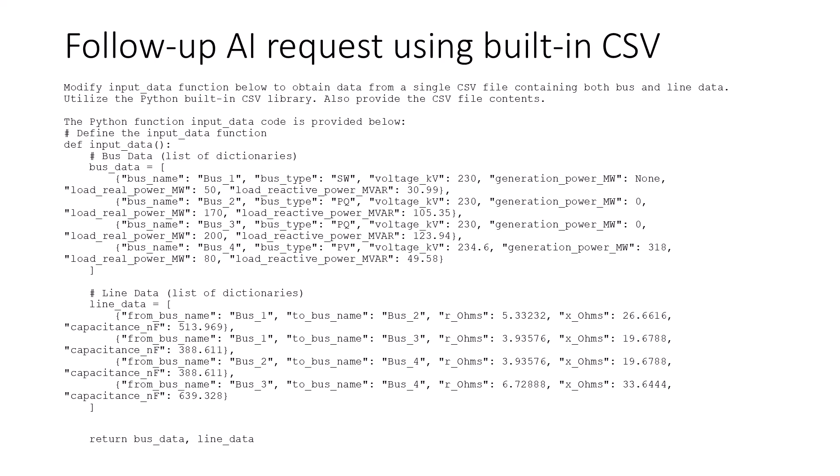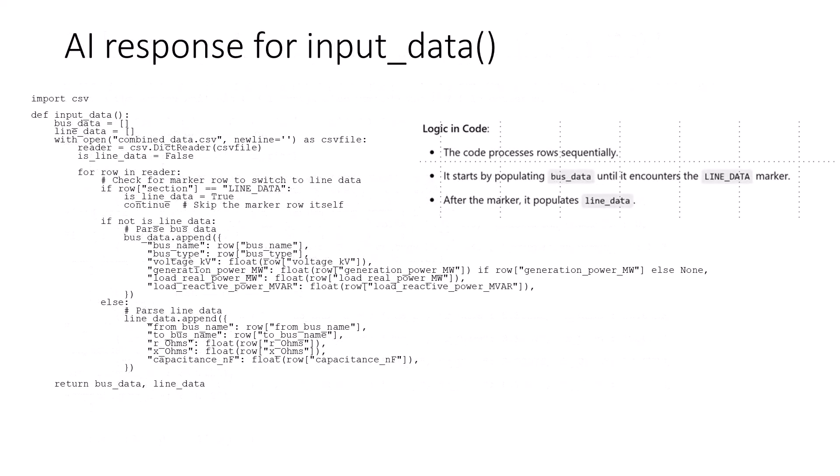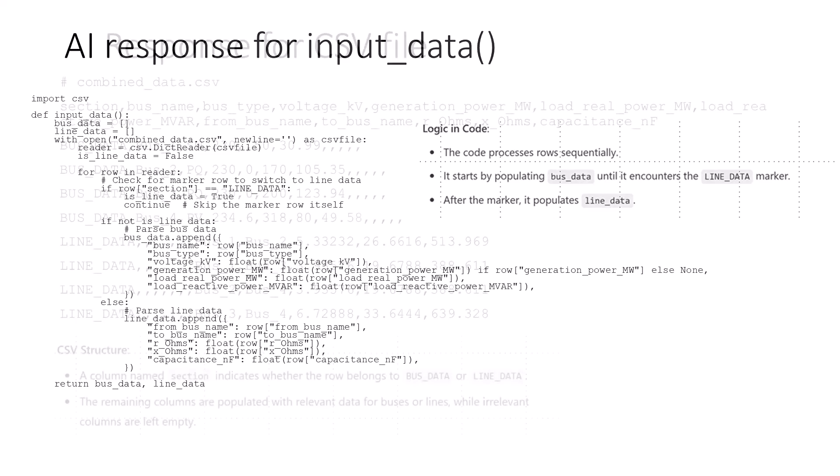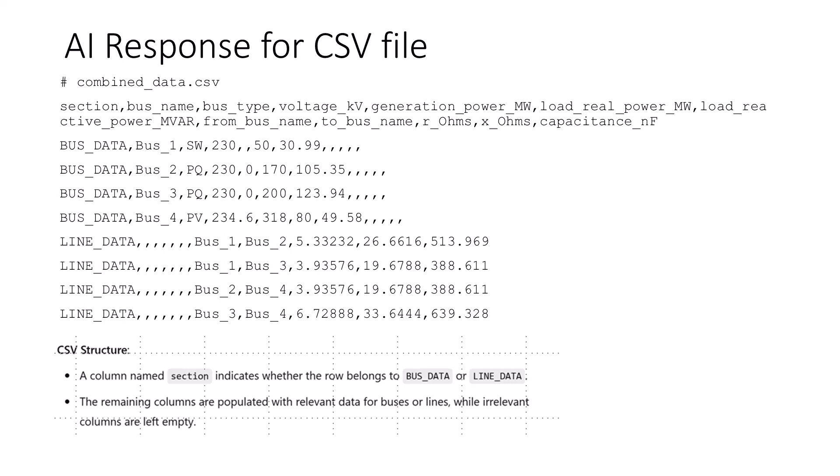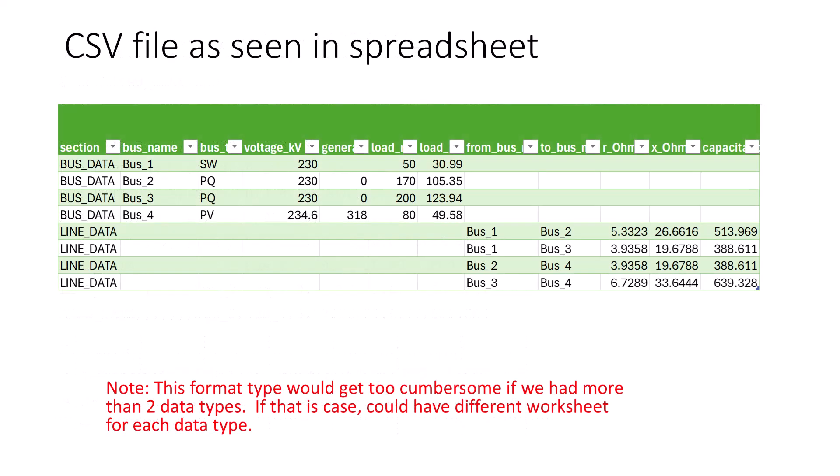Next, I set up an AI tool request for modifying the original input data function. I want the function to read the bus and line data from a CSV file using the Python built-in library. Note, I also request the CSV text file. ChatGPT then gives me the new input data function code that I can now integrate into my Power Flow program. The AI response also includes the CSV data file contents. If you open this CSV file in a spreadsheet, you see that the data is organized into bus data and line data rows as shown. I find it easier to use a tool such as a spreadsheet to view and modify data rather than editing the text file with all the commas.